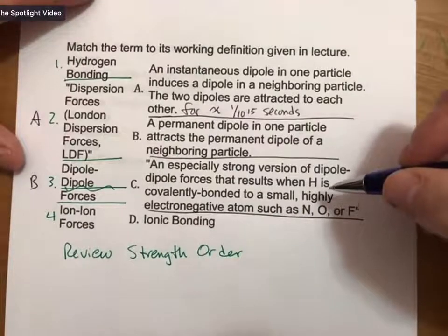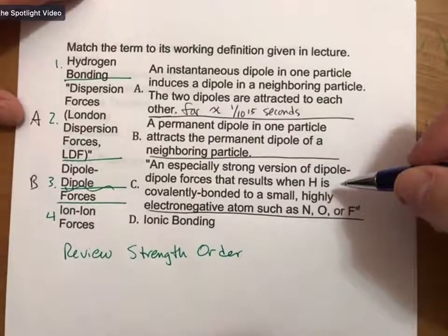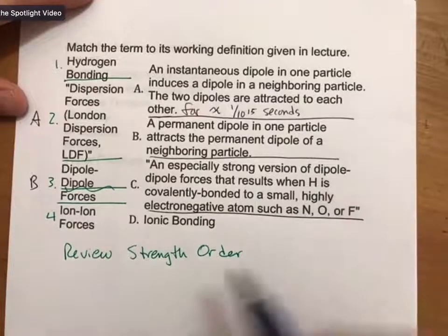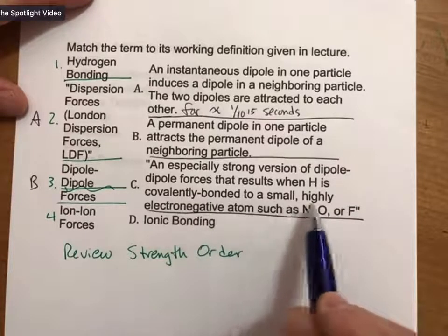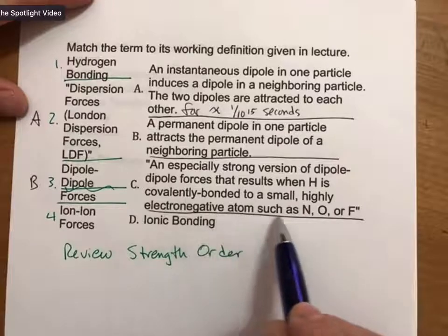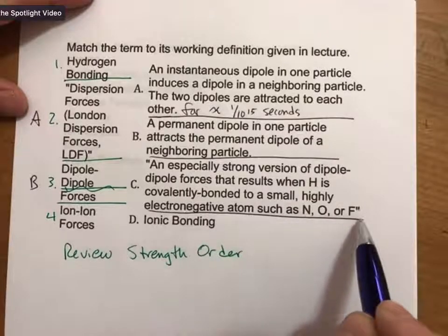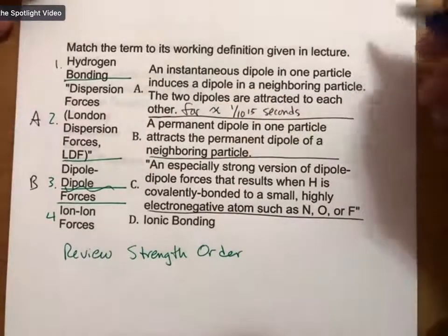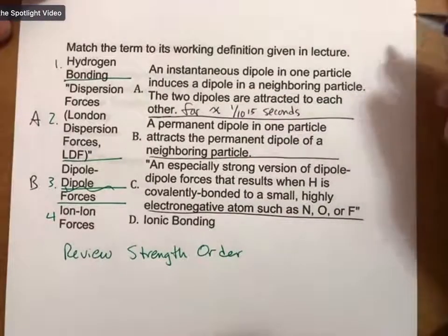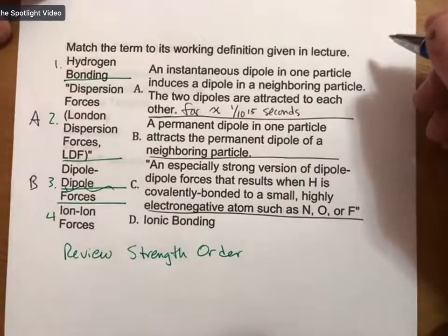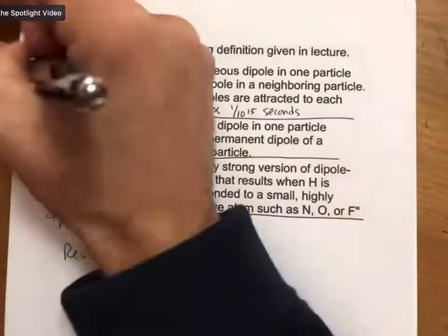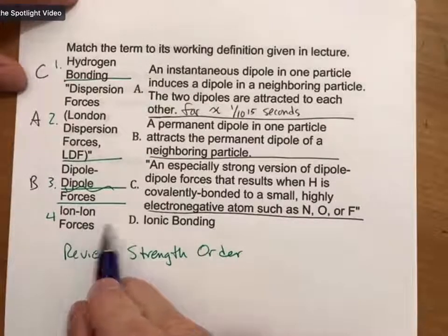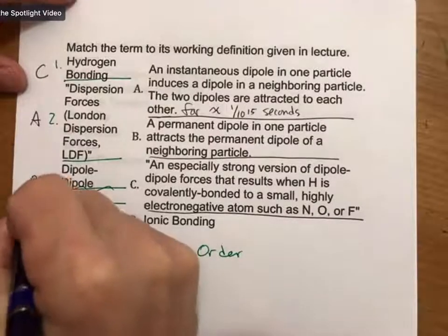C, somebody else. An especially strong version of dipole-dipole forces that results when hydrogen is covalently bonded to a small, highly electronegative atom such as nitrogen, oxygen, or fluorine. You only have two choices left, one or four. Somebody else, please. Number one. Thank you, hydrogen bonding. Thank you, Irvin. And then, of course, ionic bonding is ion-ion forces, D.